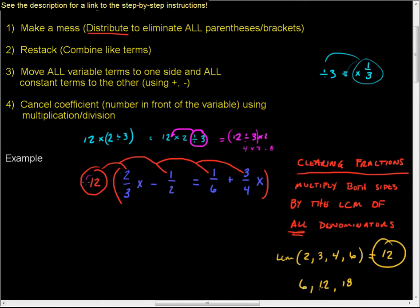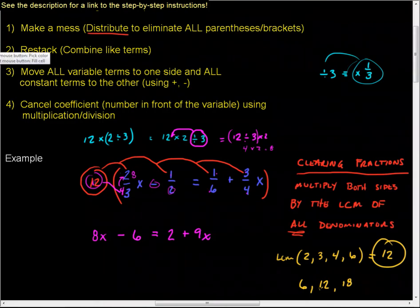That means this becomes eight, this becomes eight x. So two thirds of 12 is eight, and you just do this for all of them. So we have a minus here, we're going to drop down that minus sign. 12 divided by two is six times one is six, so that becomes six equals 12 divided by six is two times one is two. Bring down the plus. 12 divided by four is three times three is nine, it becomes nine x. And now look, we have no more fractions. No more fractions is a good thing.